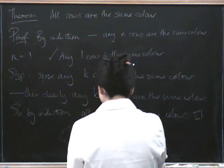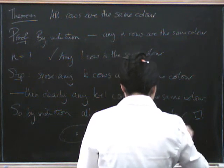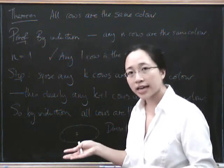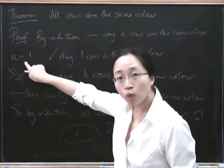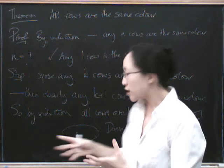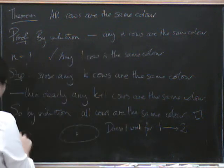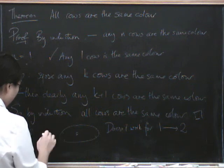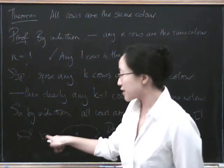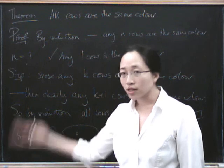The problem is that this argument doesn't work for the step going from one to two. The case of k equals two does not follow from the case of k equals one, and we only checked the n equals one starting point. If we could get two we'd get everything, but we can't get two. Here are two cows — perhaps I should draw some actual cows. Here's one cow and here's another cow. We know this cow is the same color as itself, and this cow is the same color as itself. That does not mean these two cows are the same color as each other.